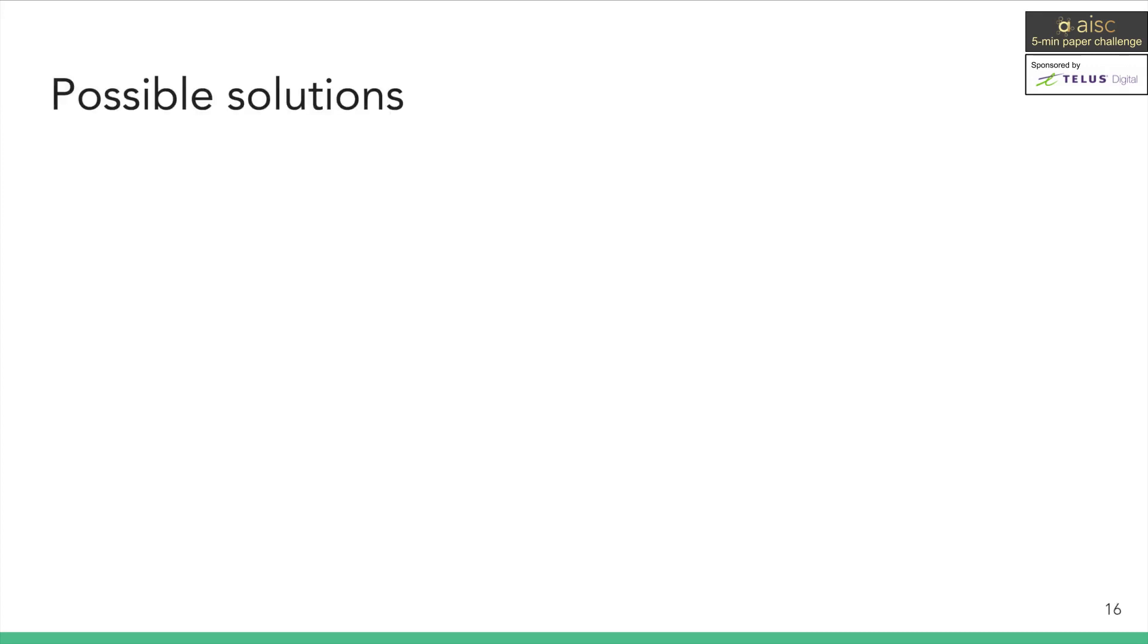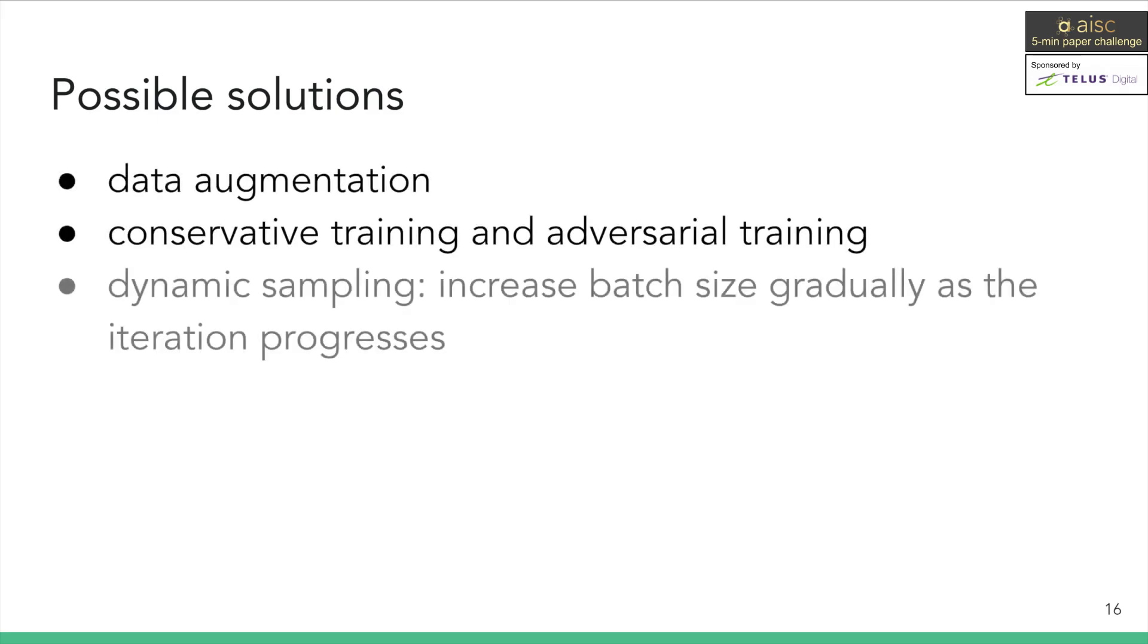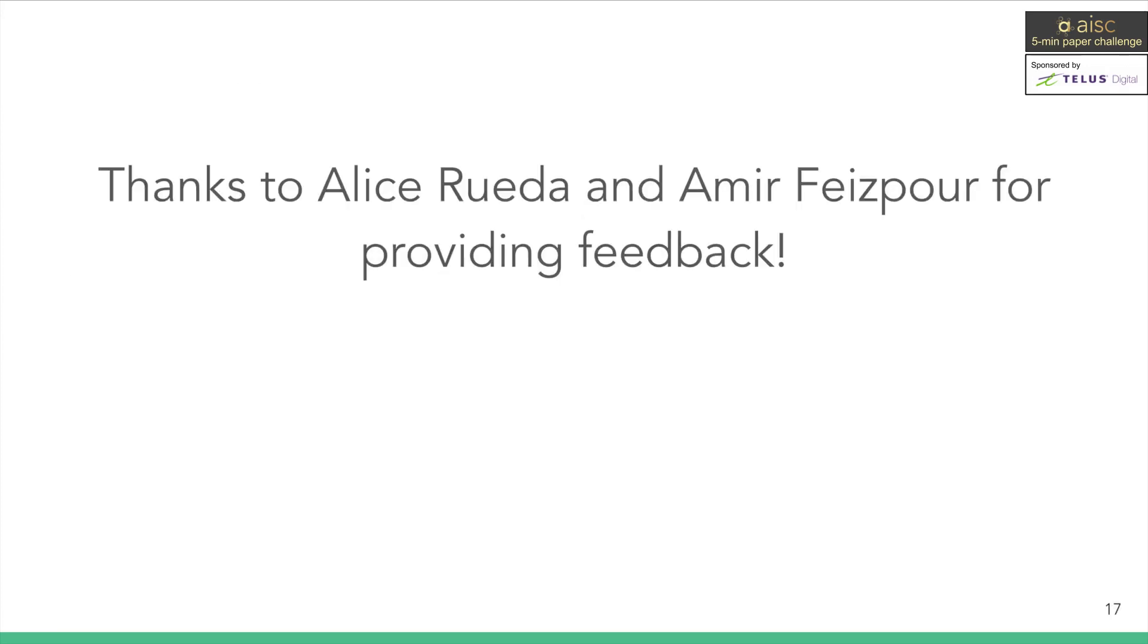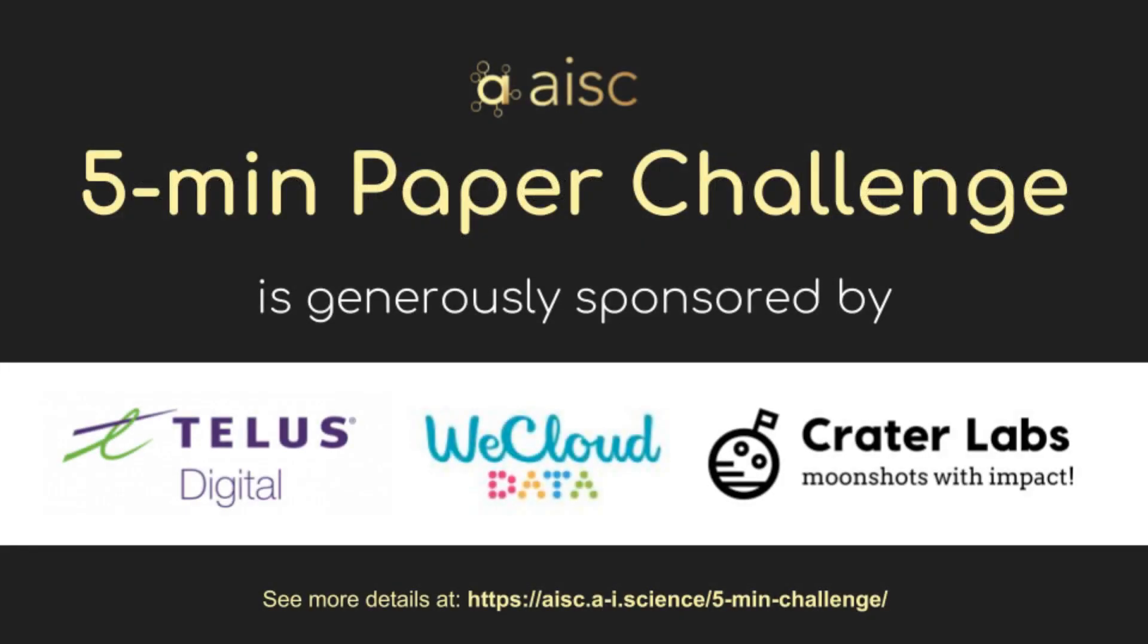So if sharp minimizers is the cause of the performance drop, is there any solution? The authors suggest some methods such as data augmentation, adversarial training, and dynamic sampling. Please check out the paper if you'd like to learn more details. There has also been a lot of work since this paper to tackle large batch training, and we expect to see more state-of-the-art results in the near future. Thanks for listening, and special thanks to Alice and Amir for providing feedback for this video.